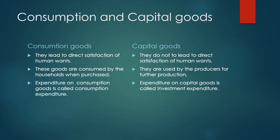A difference between consumption and capital goods: consumption goods lead to direct satisfaction of human wants and are consumed by households when purchased. Capital goods do not lead to direct satisfaction of human wants but are used by the producer for further production. Expenditure on consumption goods is known as consumption expenditure, and expenditure on capital goods is called investment expenditure.